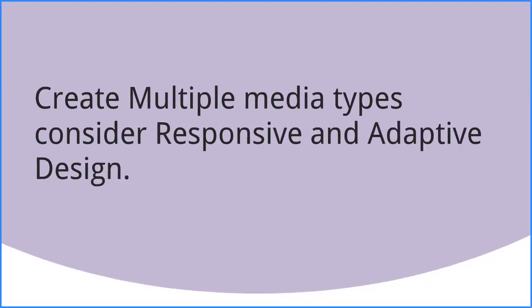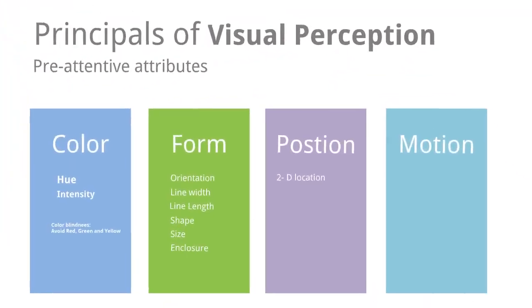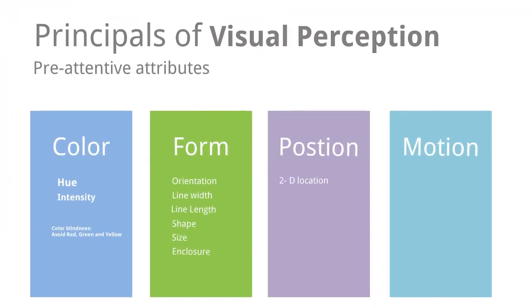Consider your medium: create multiple media types and consider responsive and adaptive design. Principles of visual perception: pre-attentive attributes include color, form, position, and motion.